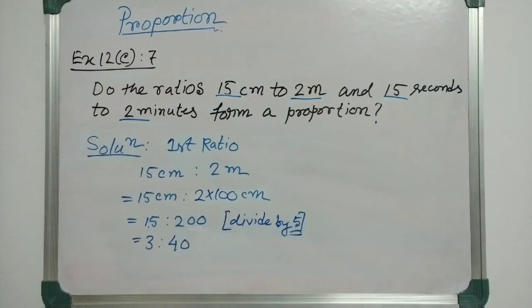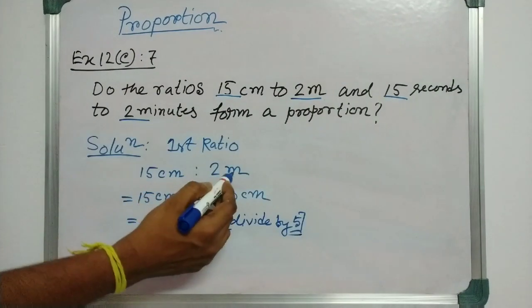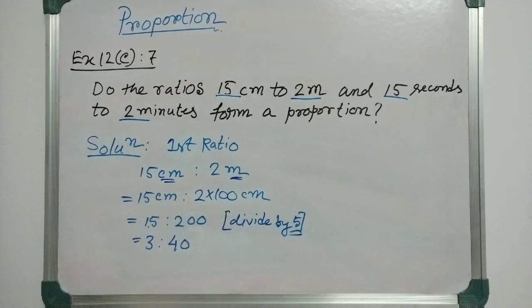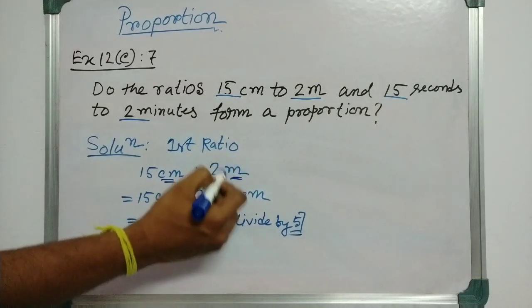First ratio is 15cm to 2m. Because the units are not same, we have to convert it into the same unit. Therefore, let us convert this meter into centimeter.